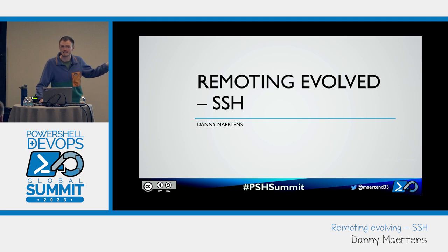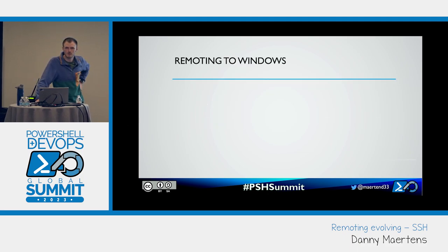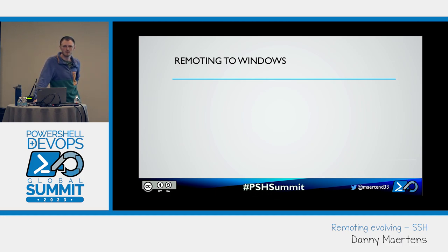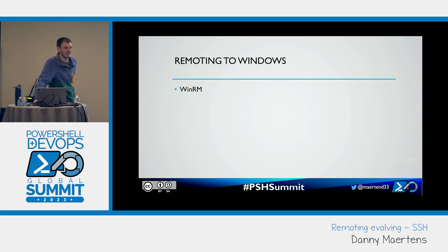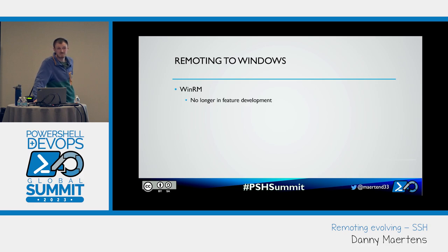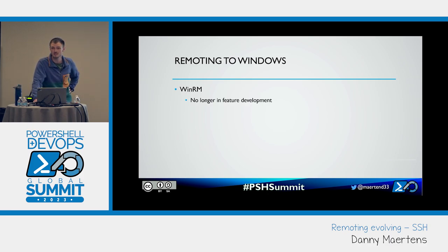Today we're talking about SSH. You might ask: why do we care about remoting to Windows? We already have WinRM and RDP. WinRM is available — it shipped in PowerShell 2 — but it hasn't really been worked on in at least five years. As long as I've been at Microsoft, no one's worked on it besides servicing, meaning it just gets critical changes. All of PowerShell remoting for the past N years has been on WinRM.